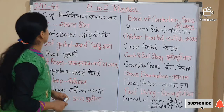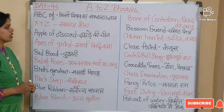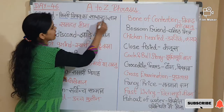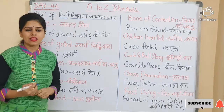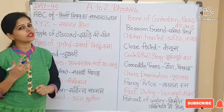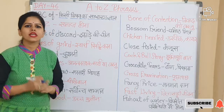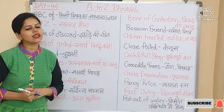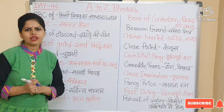Let's begin. First is 'ABC of'. ABC of means kisi vishay ka sadhaaran gyan — the basic knowledge of a subject. How can we use it in a sentence? Last week only he joined the English classes, so he is having the ABC of English.